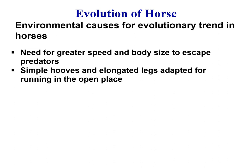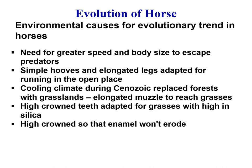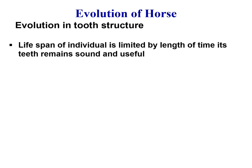The environmental causes for the evolutionary trend in the horse: the environment is a selective force that forces the animal to change. There was a need for greater speed and body size to escape from predators, and simple hooves and elongated legs were adapted for running in open places. Due to the cooling climate during the Cenozoic era, forests were replaced with grasslands. An elongated muzzle was needed to reach the grasses. High-crown teeth were adapted for grasses high in silica, as the grasslands had grasses containing silica.